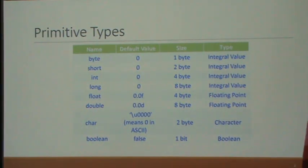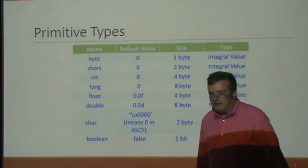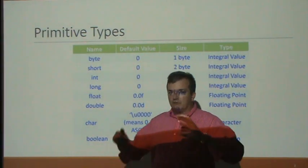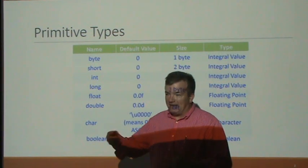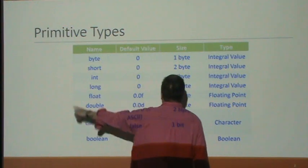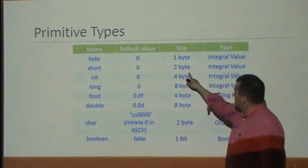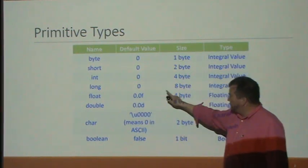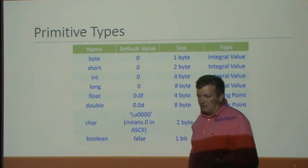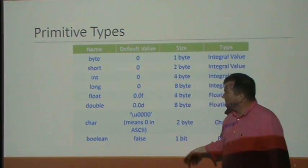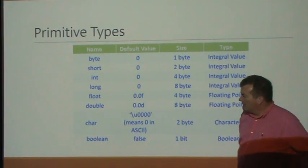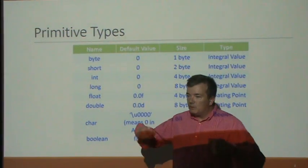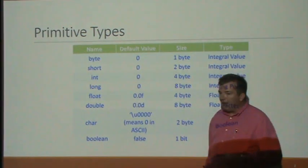A programming language — this example is Java — has what they call primitive types. These are types of storage you can declare and reserve by name. You can reserve a byte (one byte), a short (two bytes), an integer (four bytes), a long (eight bytes), a floating point number (four bytes), a double (eight bytes), and also characters and Boolean values. These are predefined for you.